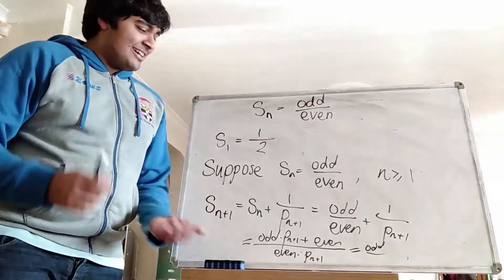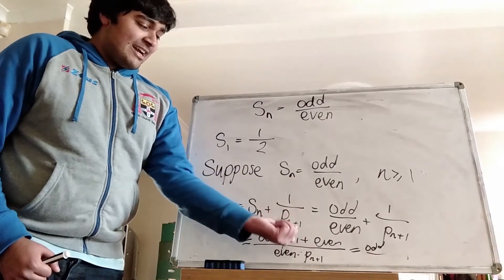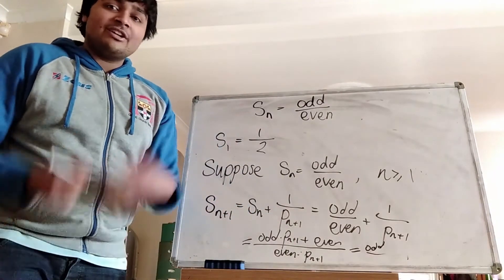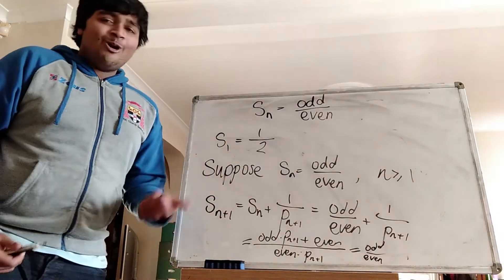Sorry, my camera just cut out. Let me continue from where I was. Odd times an odd is odd, plus even gives us odd on the numerator, and on the bottom we've got an even number times an integer, so that's even. So we get that Sn plus 1 is also of the form odd over even.